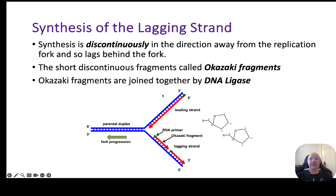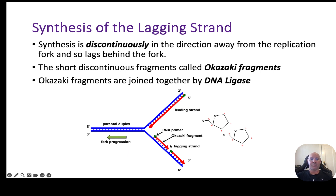The lagging strand is discontinuous because elongation is in the opposite direction to the fork progression. Only part of the strand is exposed at first, so elongation starts with a primer added by primase, then nucleotides are added in the direction away from the fork — always adding to the three prime end. Once that segment is done, DNA polymerase moves up, primase adds another primer, and the process repeats. These short discontinuous fragments are called Okazaki fragments, and finally they are joined together by DNA ligase. That's why directionality is so important in DNA replication.